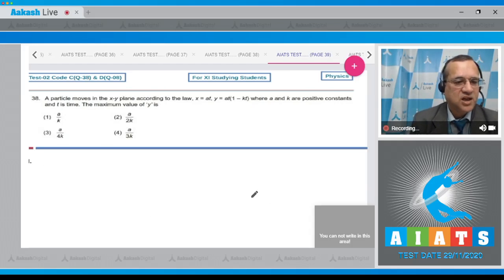Question number 38: A particle moves in x-y plane according to the law x equal to at and y is at 1 minus kt, where a and k are positive constants and t is the time. The maximum value of y is when derivative of y with respect to t will be 0. This application of maximum and minimum. To find the relation x is equal to at. From here, I will calculate t which is equal to x by a and I will fill in second equation.